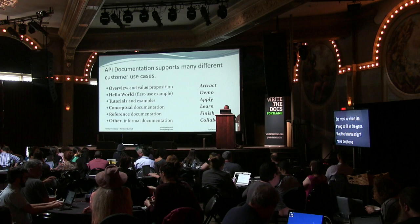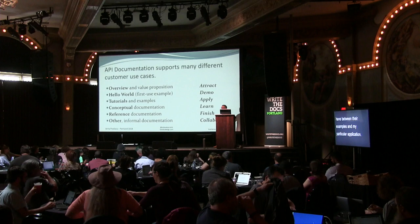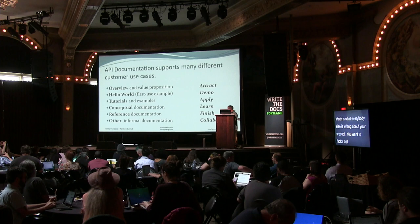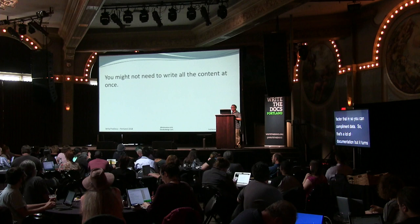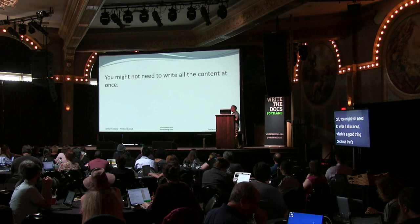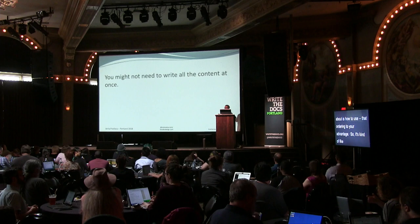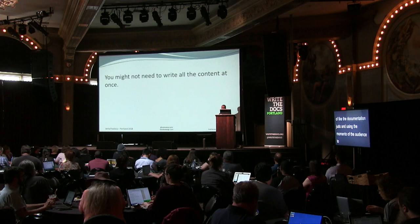Last but not least is the informal documentation, which is what everybody else is writing about your product — and you want to factor that in so you can complement it. It turns out you might not need to write all of it at once, which is a good thing. I'm going to talk about how to use that ordering to your advantage — like documentation judo, using the momentum of the audience, product, and market to your advantage.